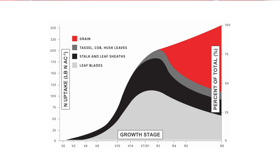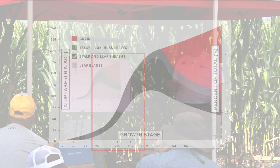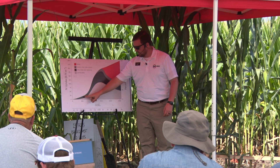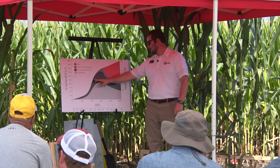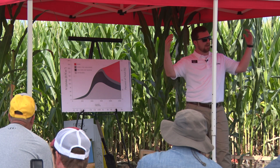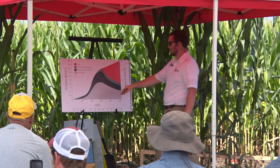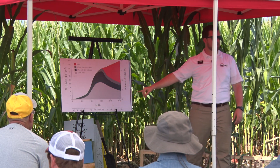The nitrogen uptake chart shows that by V6, corn has only taken up about 20 pounds of nitrogen total. But right at V6, the nodal roots emerge from the crown and the uptake curve goes way up — from V6 to tassel, the plant takes up six to eight pounds per day if it can get it. By V10, we're only 25% of the way home, and by tassel, not even 50%. Even with high-clearance and Y-drop equipment, if you apply at tassel, you still need 50% or more of your nitrogen remaining.